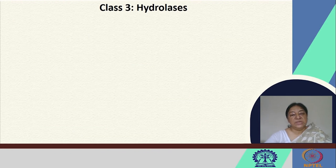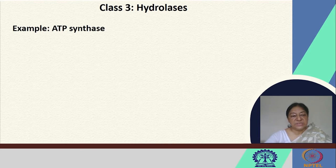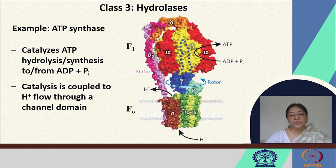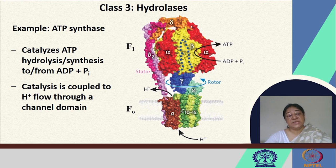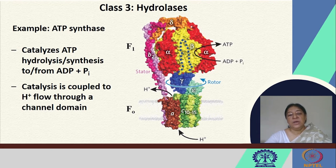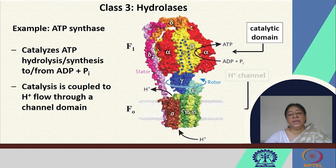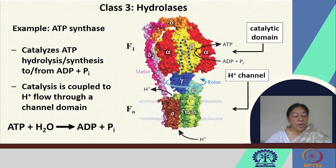In the example of hydrolases, we will be looking at ATP synthase, which as the name implies synthesizes ATP. This is a beautiful enzyme that catalyzes both ATP synthesis from ADP plus Pi and ATP hydrolysis. This catalysis is coupled to a proton flow through a channel. We will visit this enzyme in further detail when we look at motor proteins and membrane proteins to see how the catalytic domain and the proton channel work together.